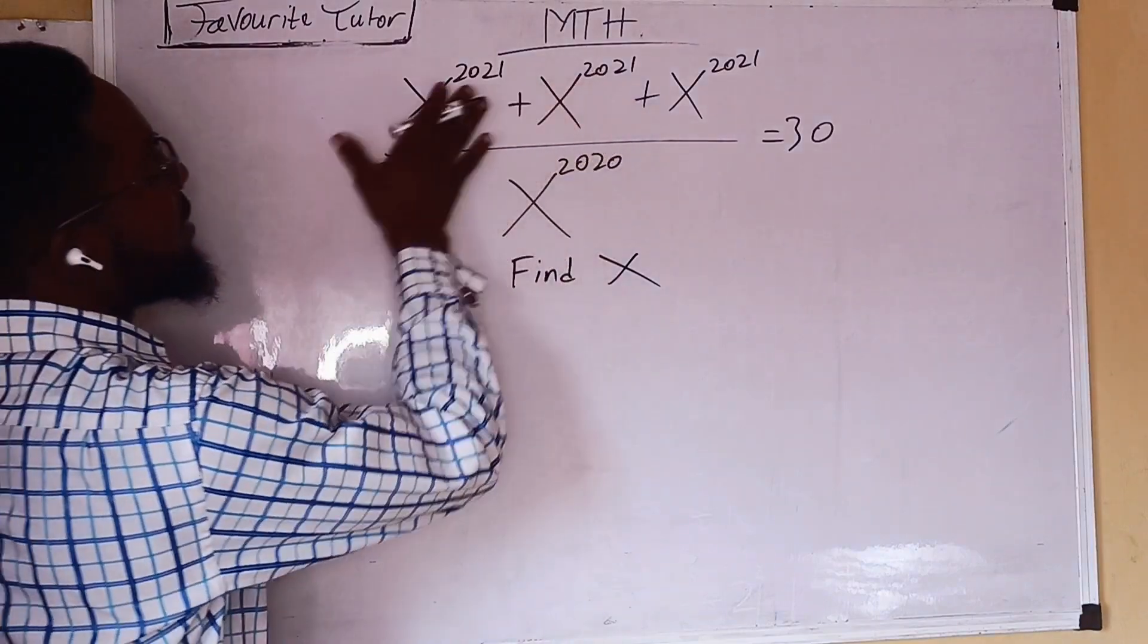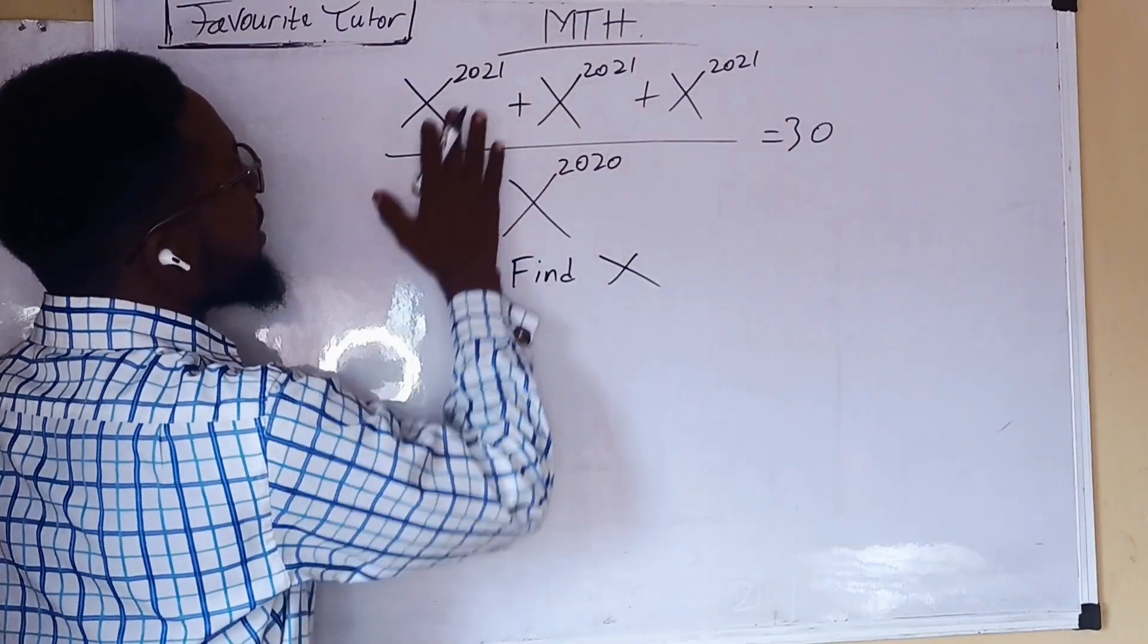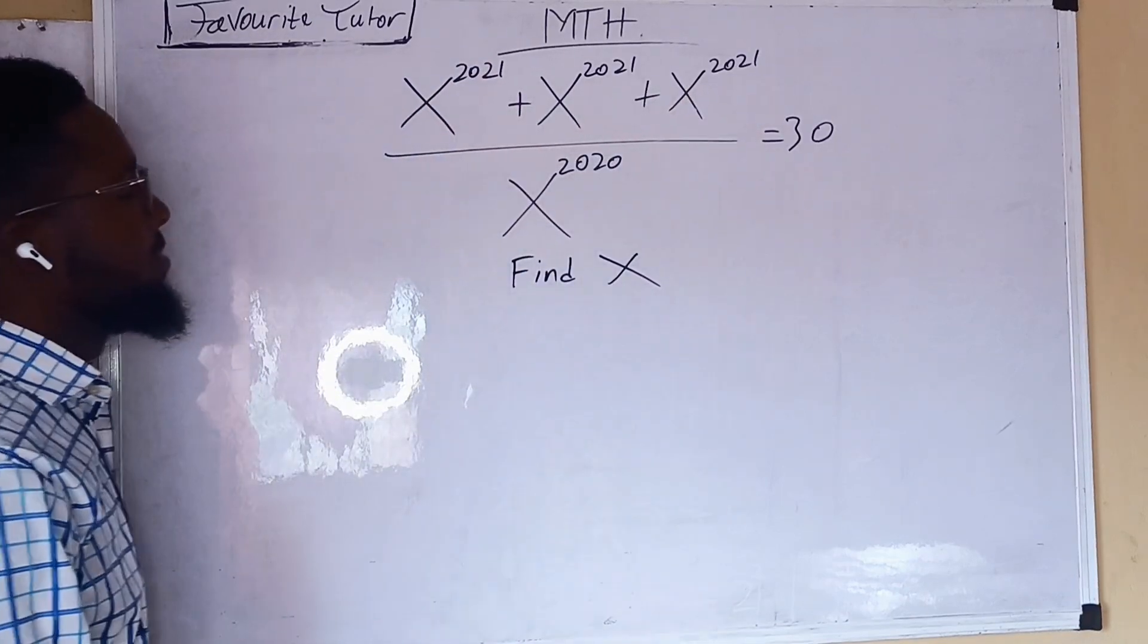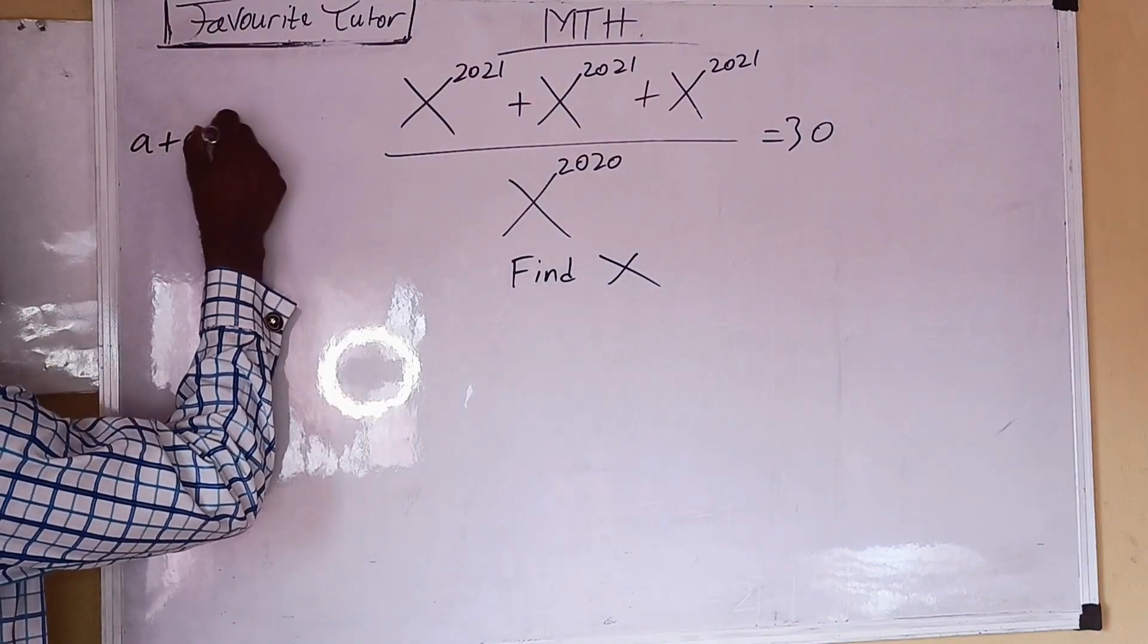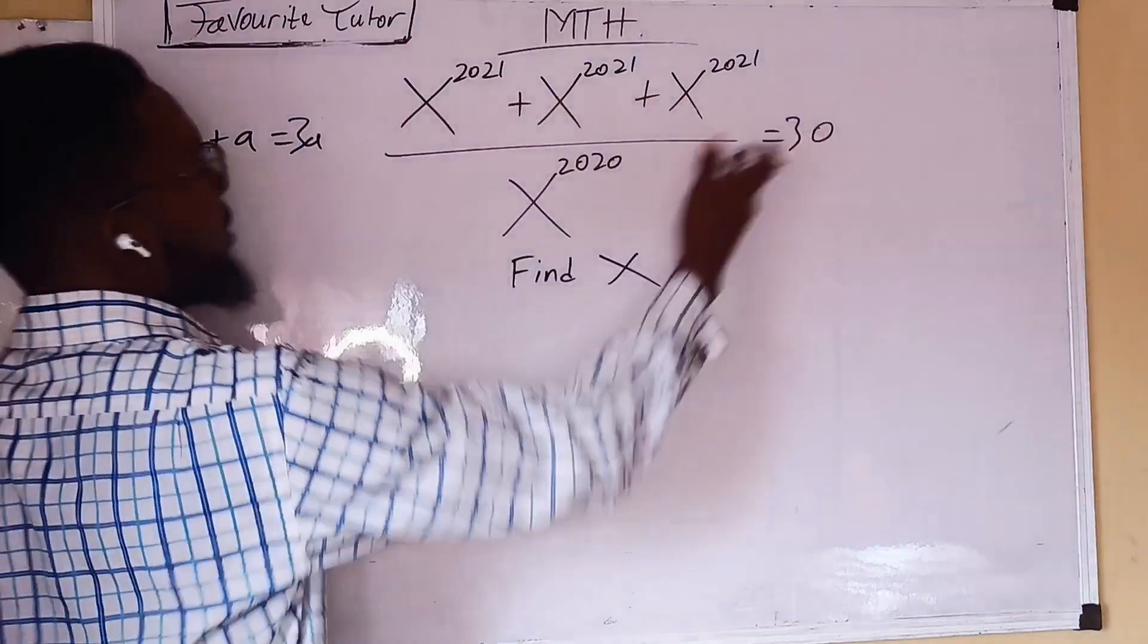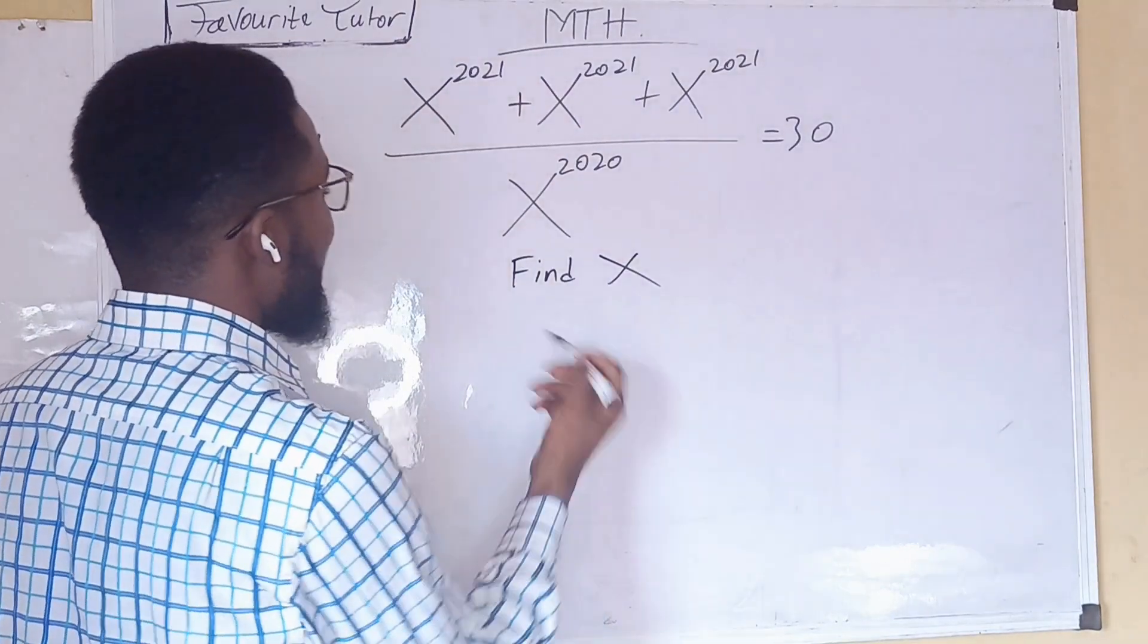If we look at the numerator, this is a fraction. Look at the numerator. This is actually addition of three terms. It's just like saying a plus a plus a, it's going to give us 3a. So this is just addition of three terms.